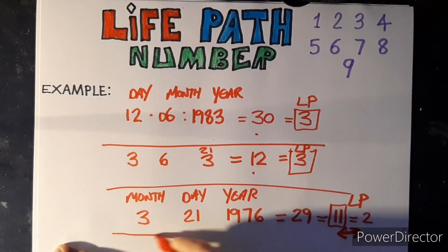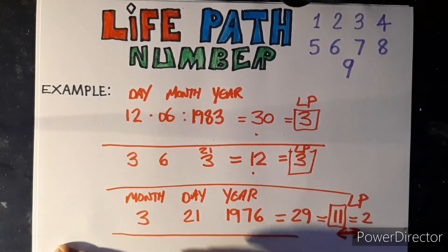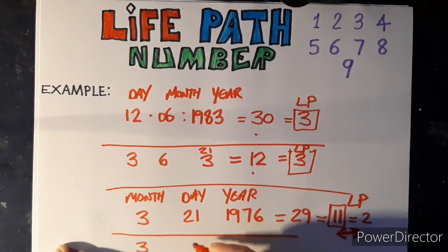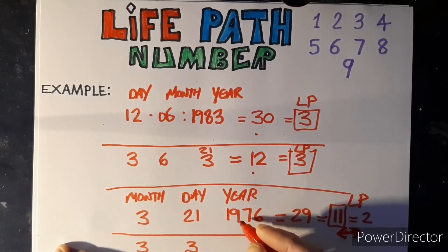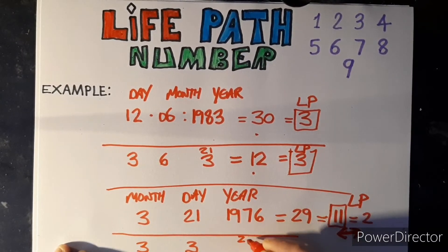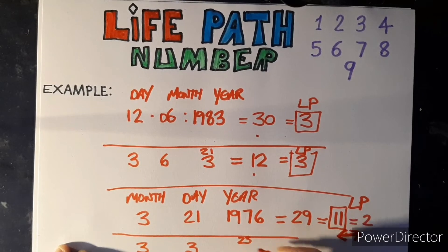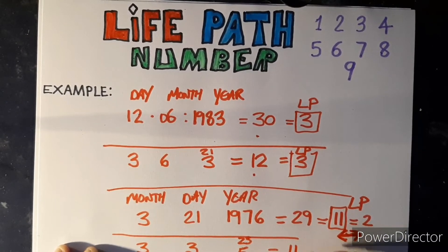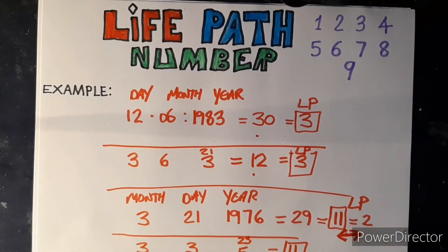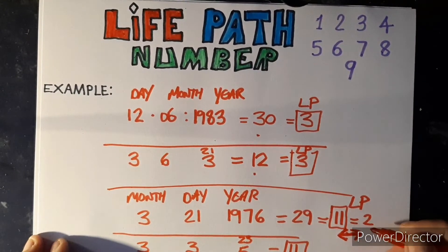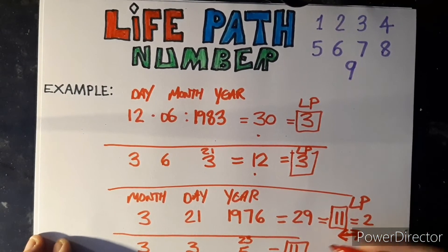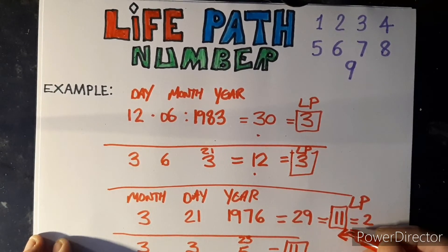Now doing it in the trinity: the month three stays three, the day twenty-one becomes a three — two plus one is three — and the year: nine, ten, seventeen, twenty-three, adds to five. So three plus three plus five equals eleven. I reach eleven — I wouldn't be able to find the two, because eleven is a master number and we don't normally break master numbers.